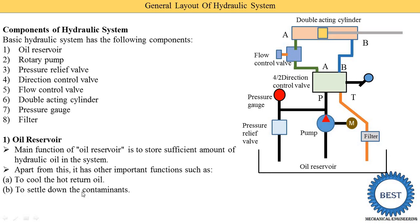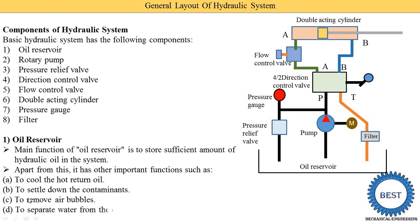The next function is to settle down the contaminants. Due to wear and tear, some parts wear out and metal particles come out with the oil — we need to remove these, which is called settling down the contaminants. Another function is to remove air bubbles. When the temperature of the oil increases, there is a possibility of bubbles forming inside the oil, and we need to remove these air bubbles from the system. The next point is to separate the water from the oil, which is also carried out in the oil reservoir.